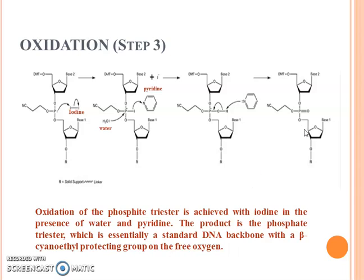In the oxidation reaction, the phosphite triester formed in the previous step is quite unstable. Therefore, we have to make it more stable by the addition of iodine, water, and pyridine. The product is a phosphate triester, which is a much more stable form, and it is still protected by the cyanoethyl group.